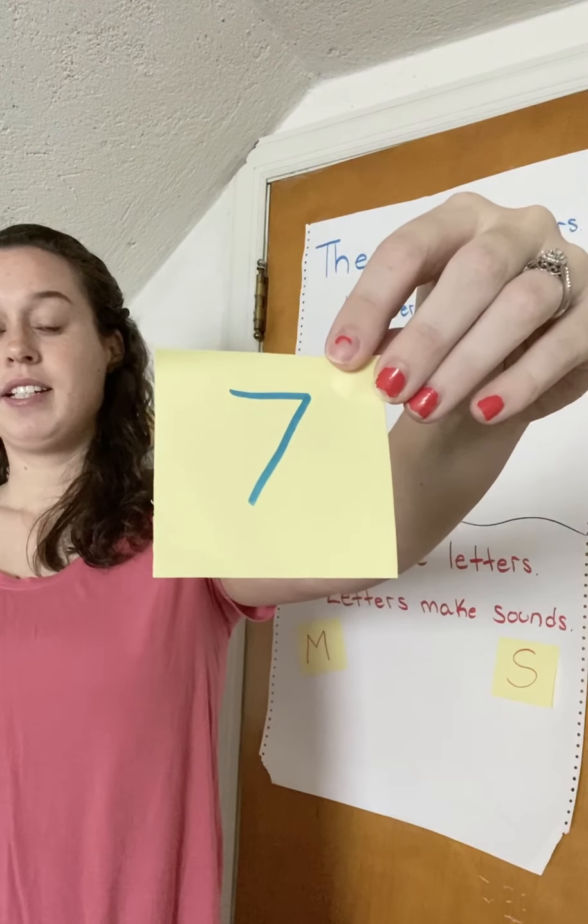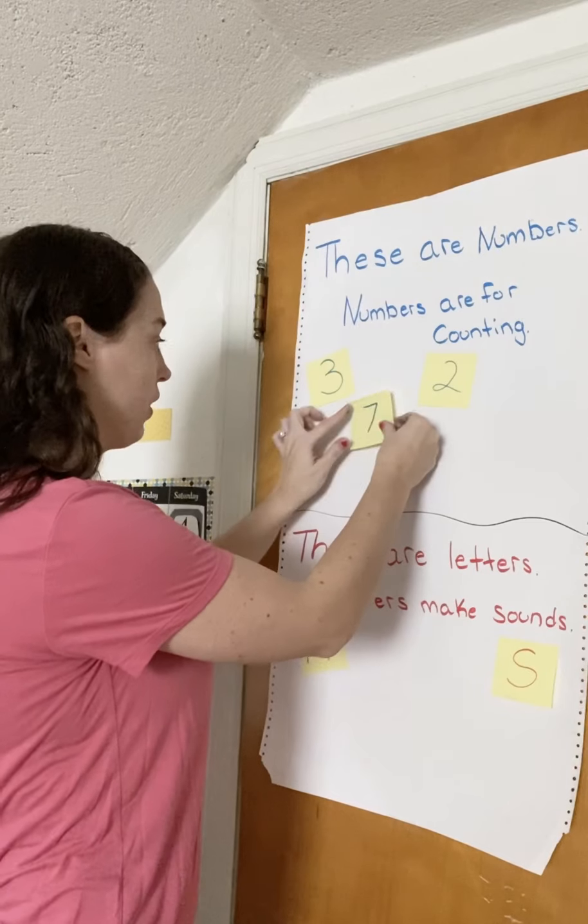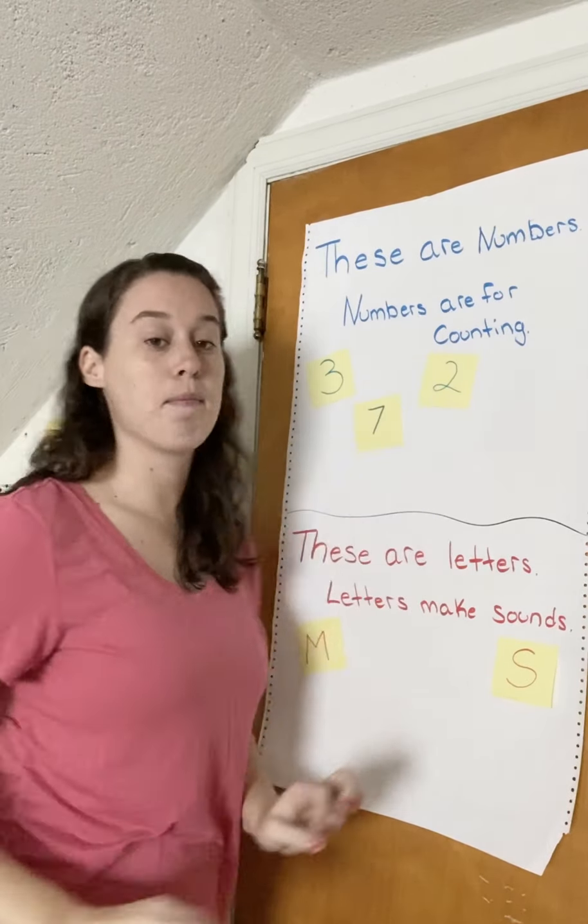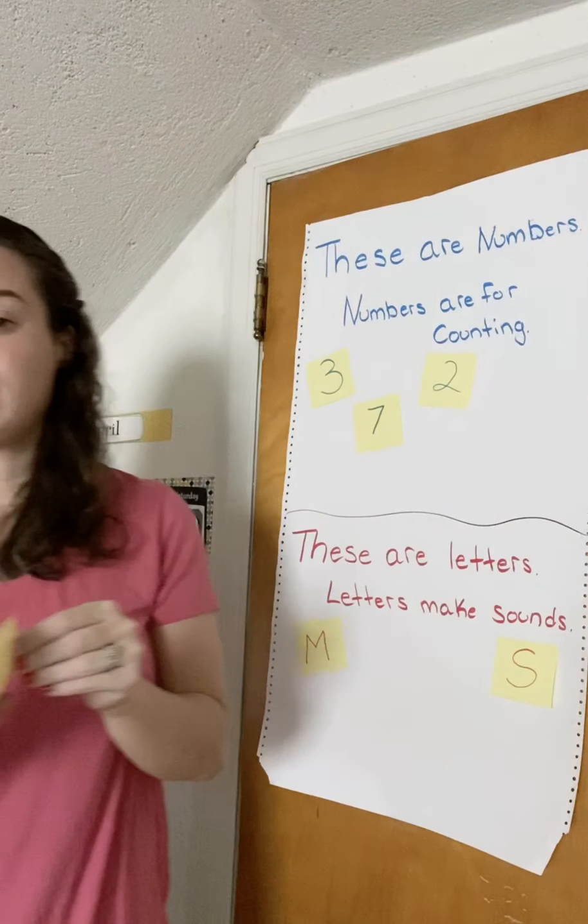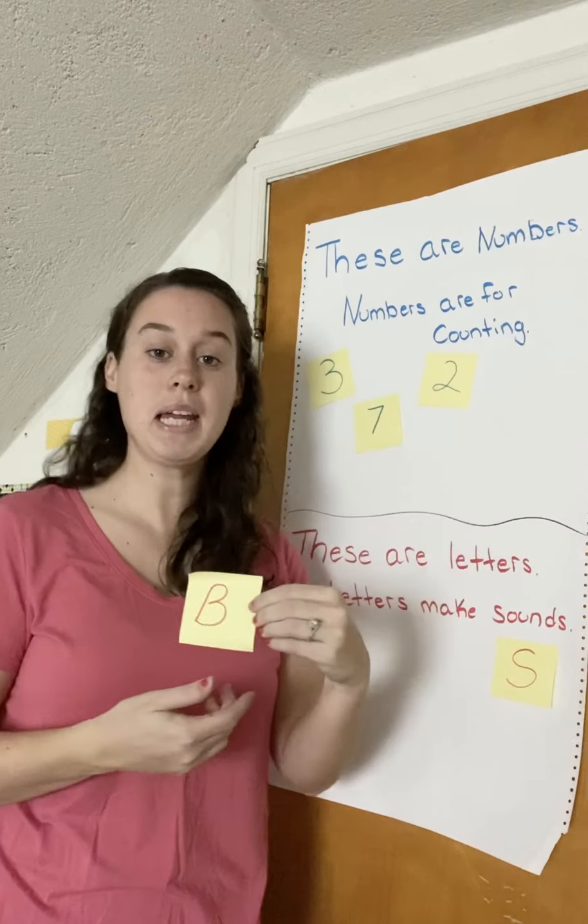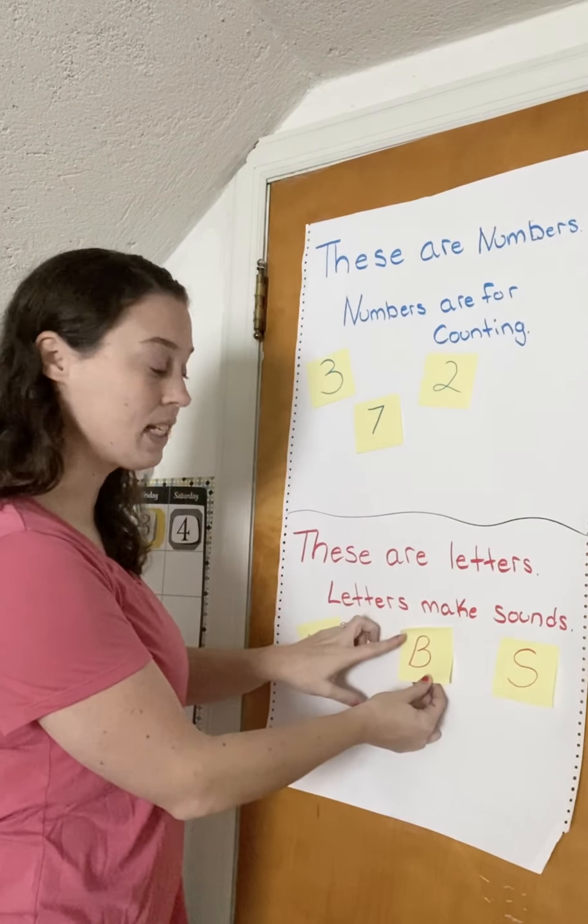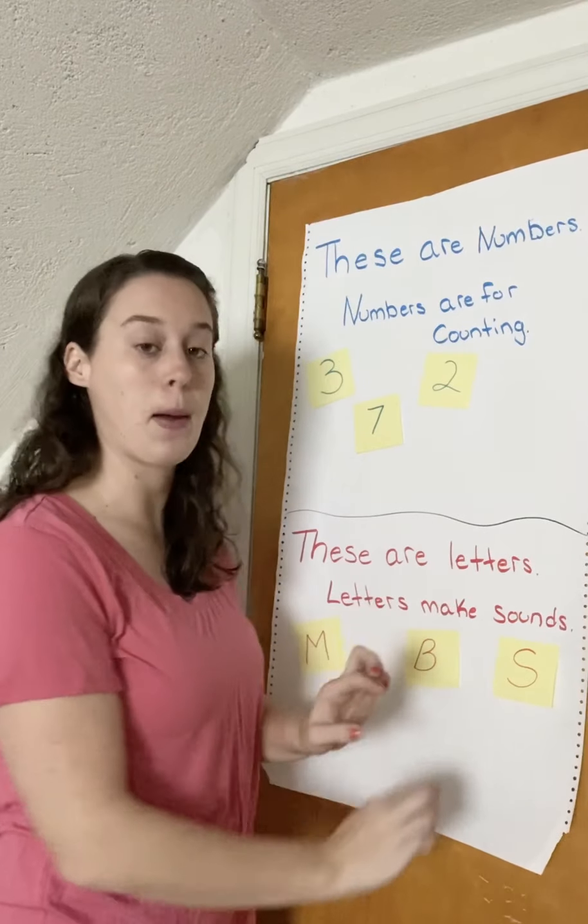This, my friends, is a what? That's right, it's a number. Number seven. All right, we have a letter B. B says buh. B says buh.